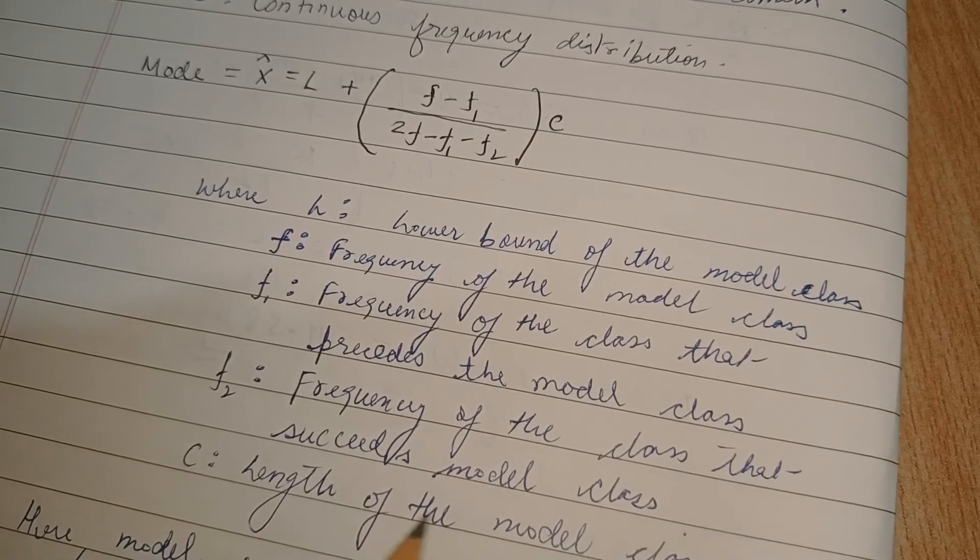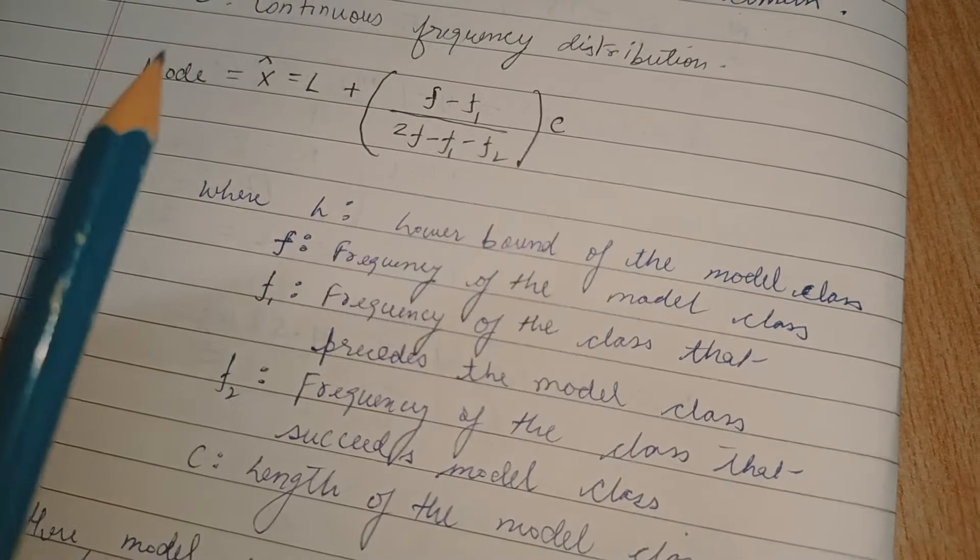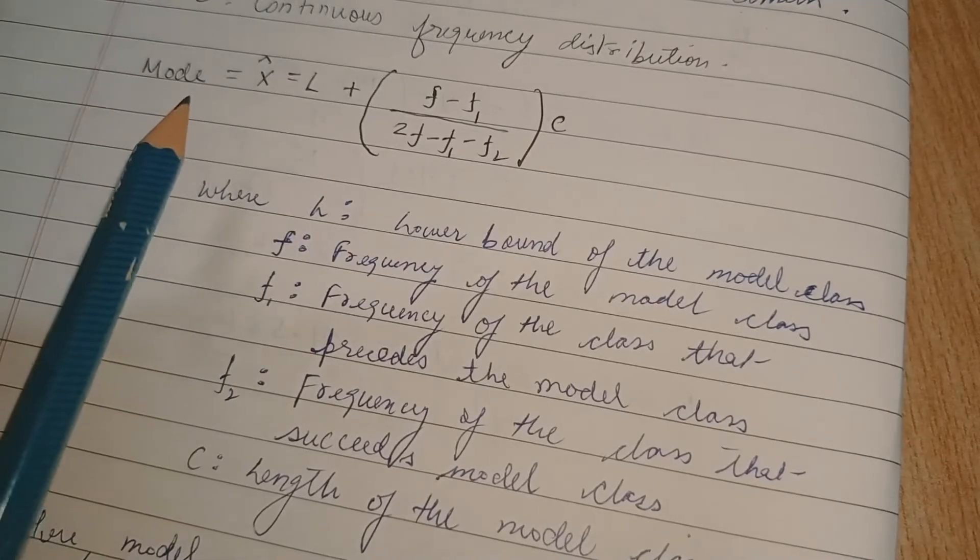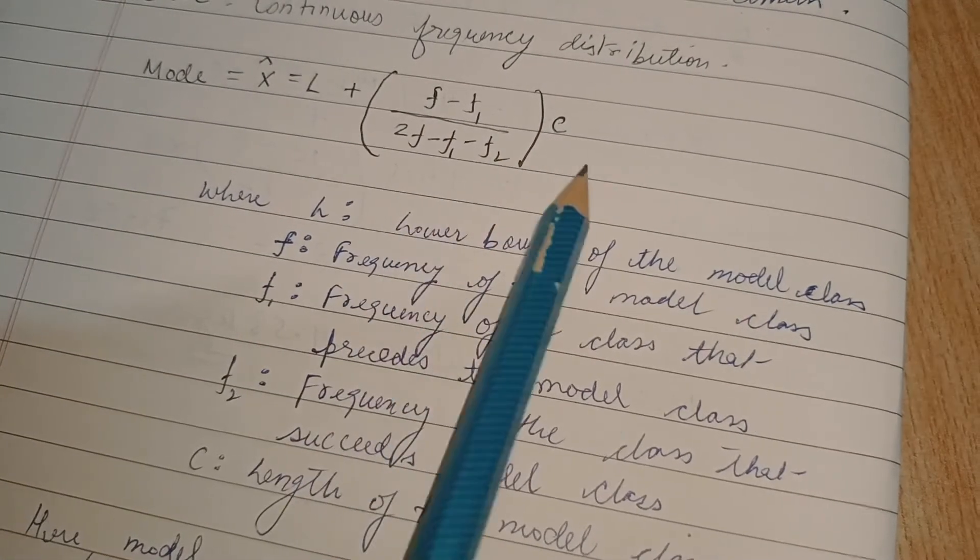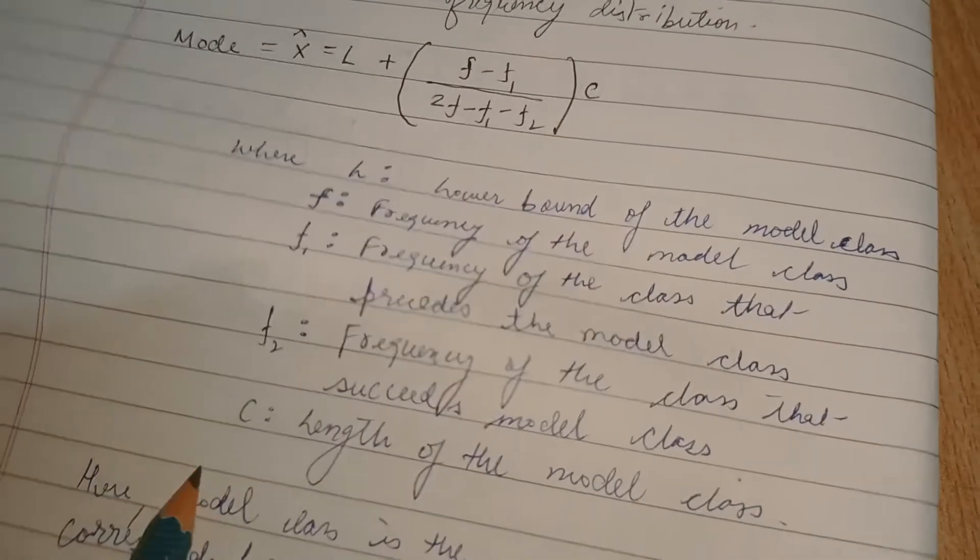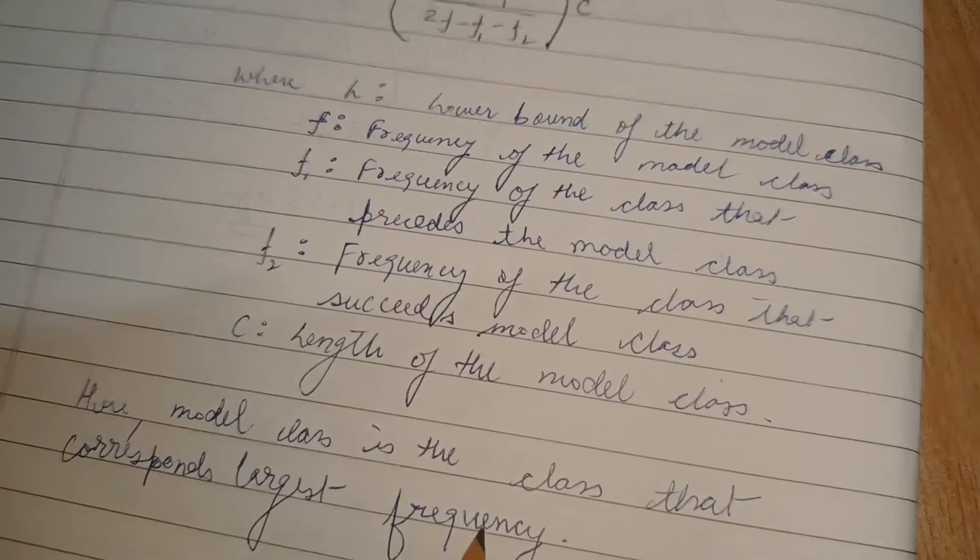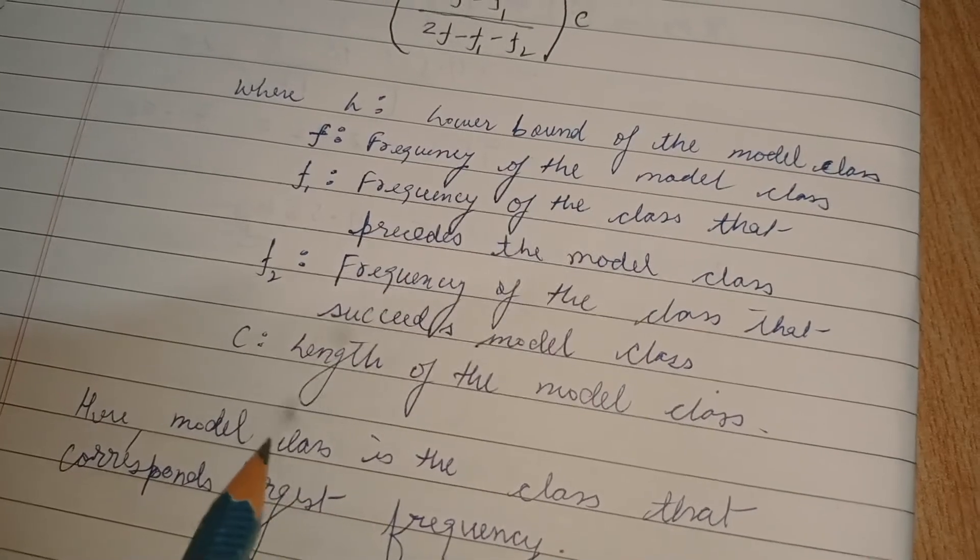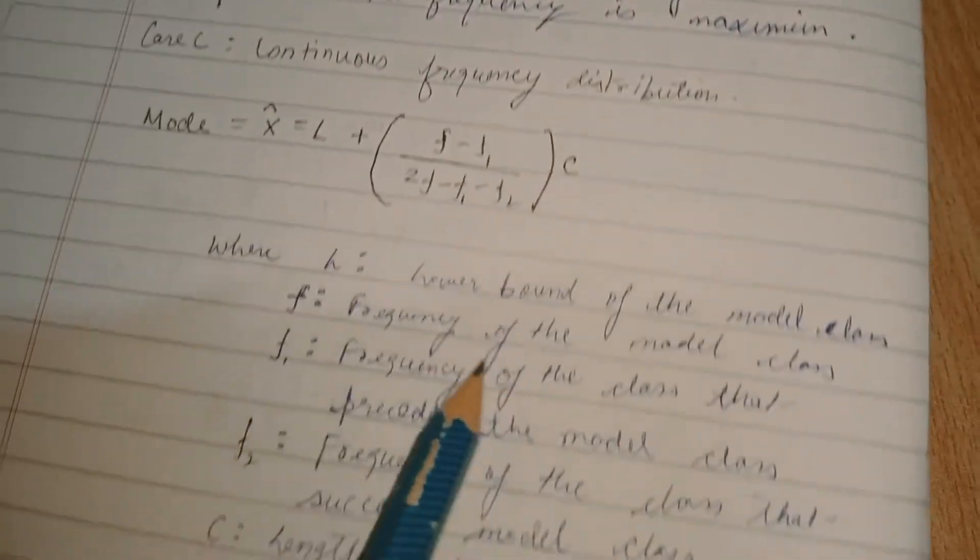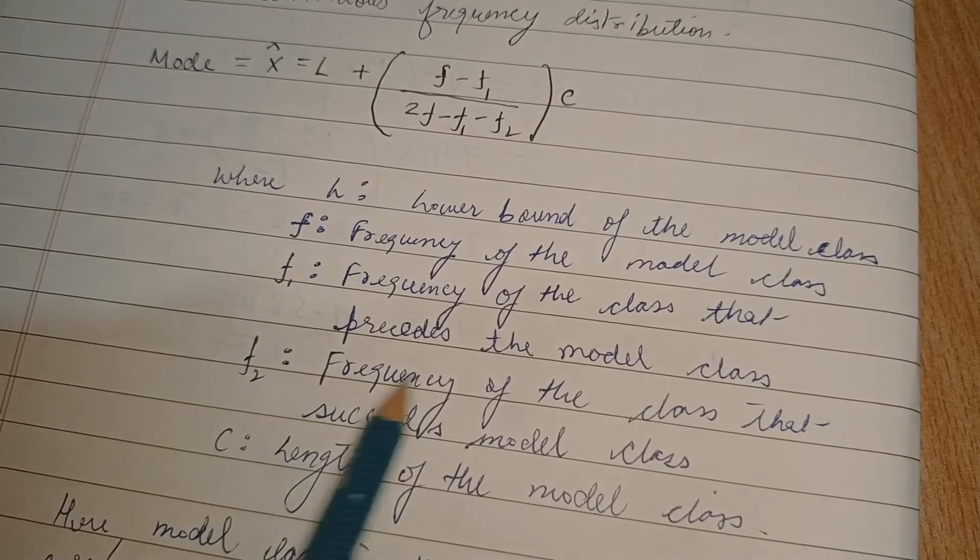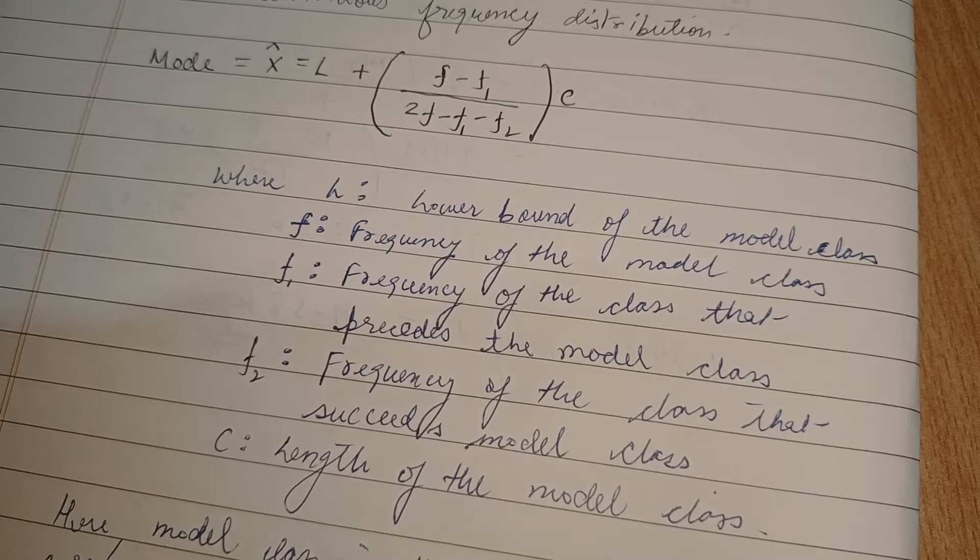C is the length of model class. Hence you should always note down whatever symbols you are writing. Here, model class is that corresponding to largest frequency, the class that corresponds to larger frequency. I would suggest you to note down this formula and their meaning of all the variables. Pause the video and note down.